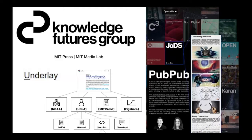One is the Underlay, which is a decentralized knowledge graph of things like authority files and claims. And the other is PubPub, which some of you may have seen, which is a publishing platform for conversations around living documents.